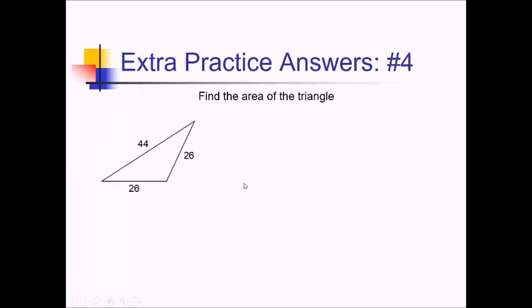On this problem, since they gave me all three sides and they want the area, I use Heron's formula. Let's start by finding S, the semi-perimeter, which is just half of A plus B plus C. So we say one half of 44 plus 26 plus 26.